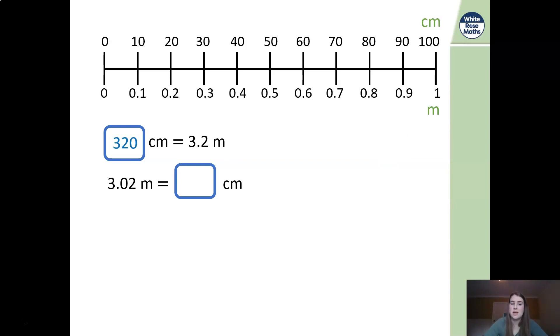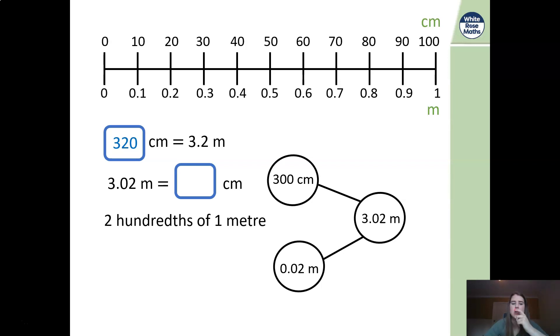So 3.2 metres is the same as 320 centimetres. We multiply it by 100, move your decimal twice, 320. 3.02 metres. Now that 2 there represents the millimetres. So if we work that out, that's 300 centimetres and 0.02 metres. So 2 hundredths of a metre there is actually going to be 2 centimetres. So 300 and the 2 centimetres there is 302. We've broken it down so it's even smaller there. Now that you know that, I want you to pause the video and see if you can have a go at questions 1 to 4 on your worksheet.